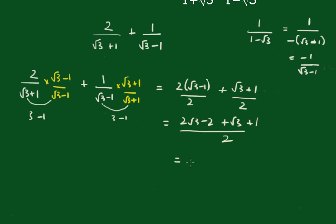And we get 2 root 3 minus 2 plus root 3 plus 1 all over 2. And that gives me 3 root 3 minus 1 over 2.